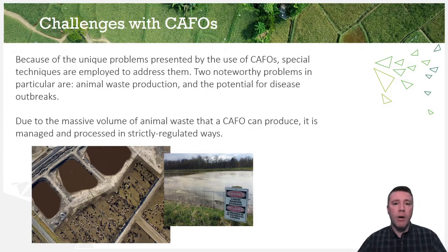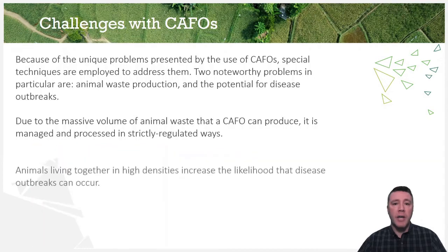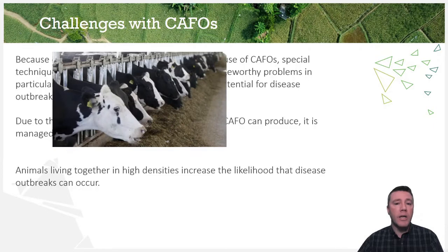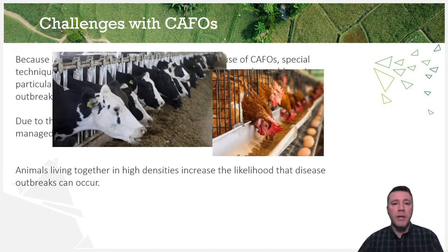The second problem of serious concern relates to antibiotic use. When any group of organisms has a high population density, such as that found in a CAFO, the potential for disease outbreaks and transmission increases. In order to proactively maintain the health of the animals and prevent disease outbreaks, antibiotics are regularly included in the feed for the animals. The high usage of antibiotics drives the evolution of bacteria to become increasingly resistant to them.